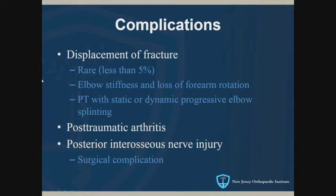Complications: if a fracture is non-displaced initially, it's pretty rare that it displaces late — that's why we start them moving quickly. Stiffness is the main complication we're always looking for with elbow injuries. If patients get really stiff, we can use a dynamic or progressive splint to help gain flexion or extension. And with any fracture involving the cartilage surface, you can have post-traumatic arthritis.